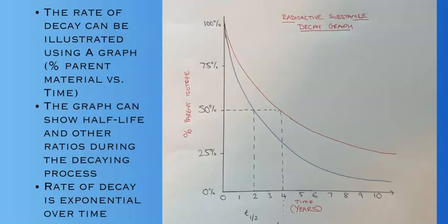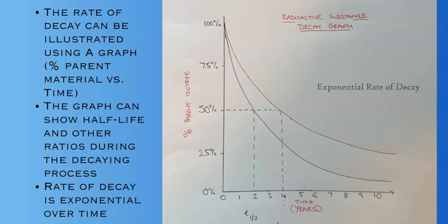In textbooks and research journals, the rate of decay and half-life is often illustrated as a graph. One axis shows the parent isotope percentage remaining, and the other axis shows time. You can see when the material achieves half-life and how much of the parent isotope remains. Notably, the rate of decay is exponential — it gets faster as more and more daughter isotopes are created through decay of the nucleus.